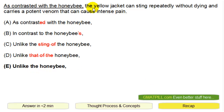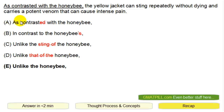As a recap: the only important part of the sentence is the comparison structure. You want 'in contrast to X, Y' — so 'in contrast to the honeybee, the yellow jacket blah blah blah.' The issue with A is 'as contrasted.' The issue with B is the apostrophe 's.' The issue with C and D is you're not comparing apples to apples — you're mixing in 'the sting' or something else. The only one that works is answer choice E: 'Unlike the honeybee, the yellow jacket...'